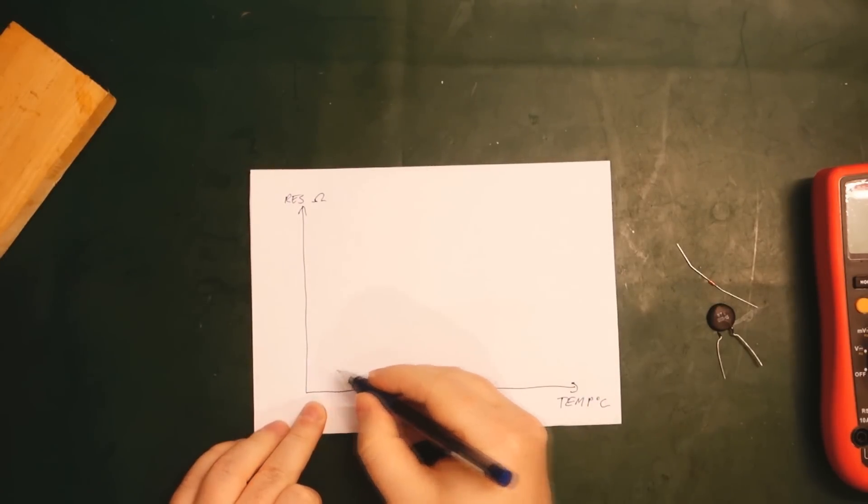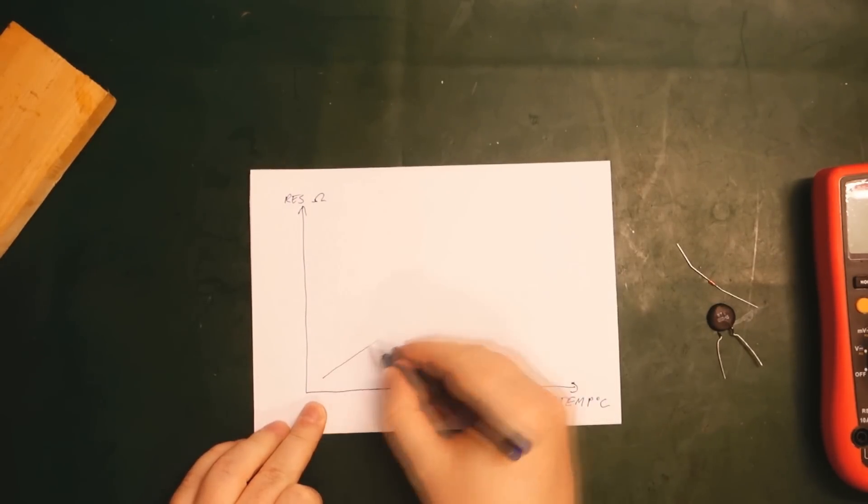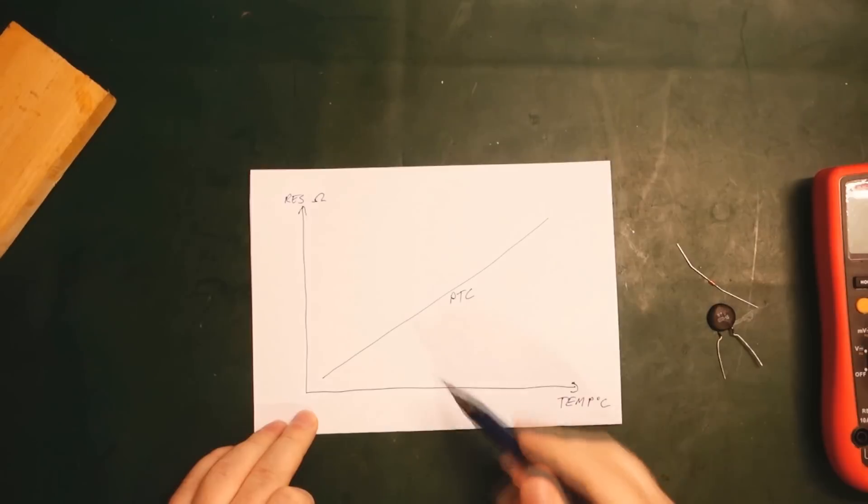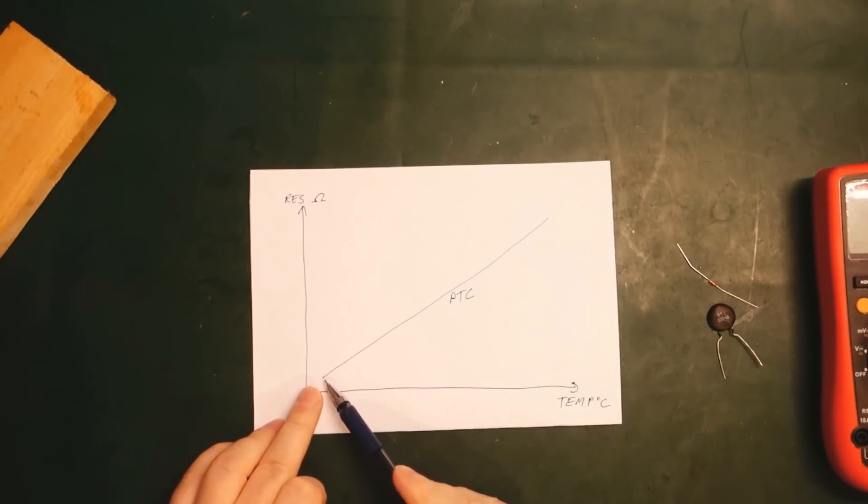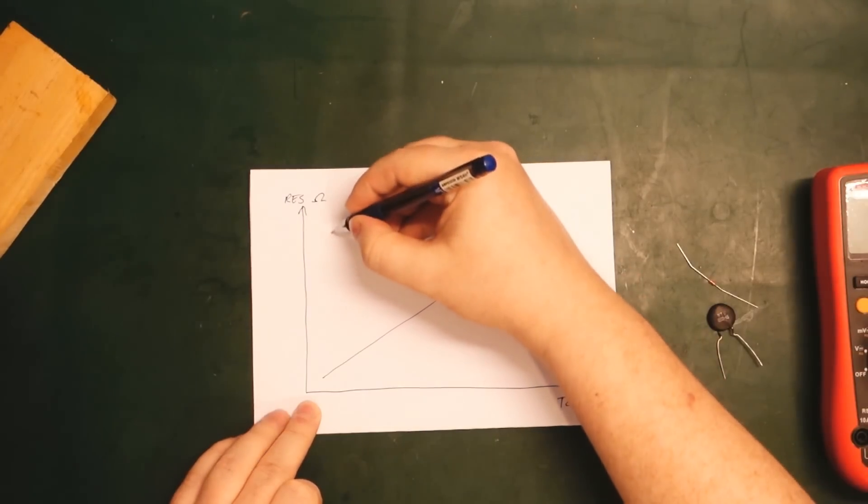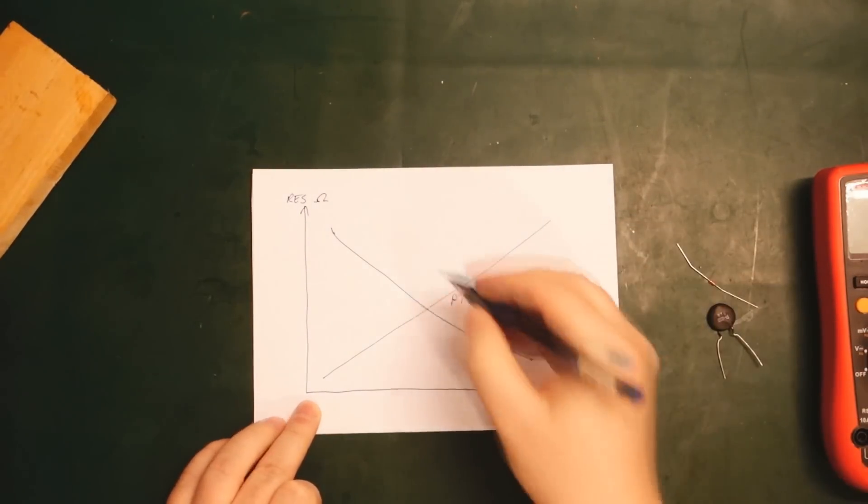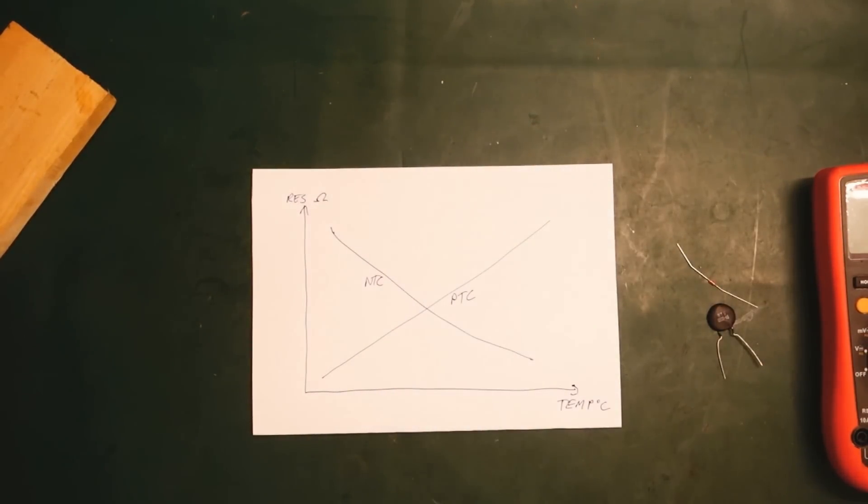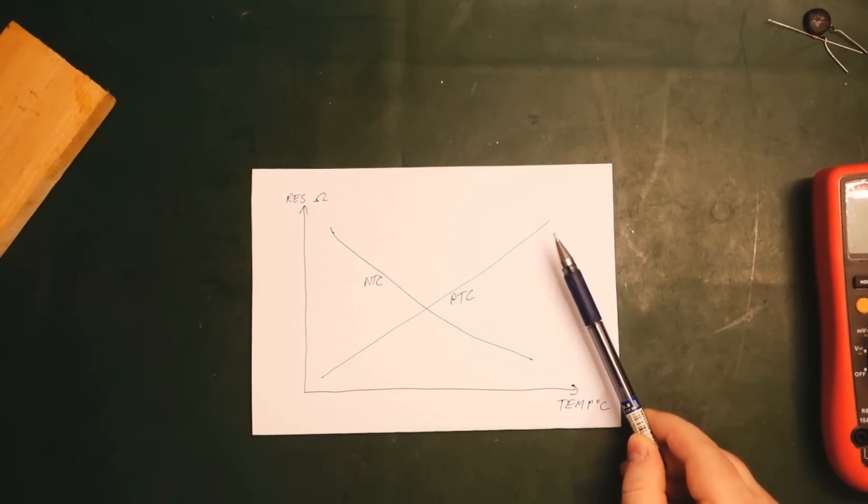A PTC thermistor could look something like this. It starts out at a lower resistance at a lower temperature, and then as temperature rises the resistance will go up. NTC is exactly the opposite. It will start out at a higher resistance and as the temperature rises the resistance will go down.